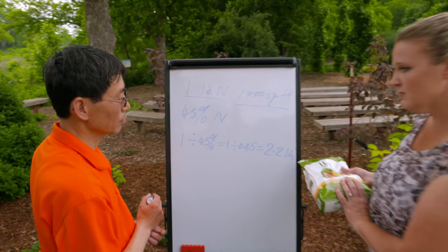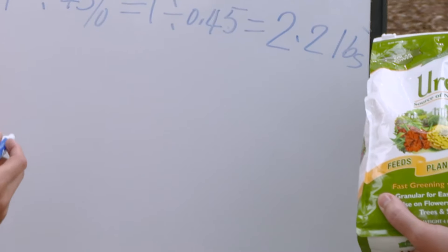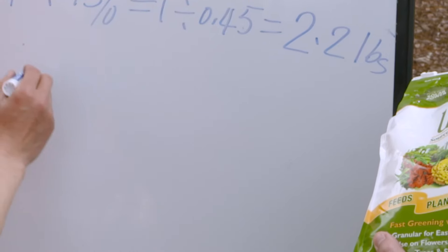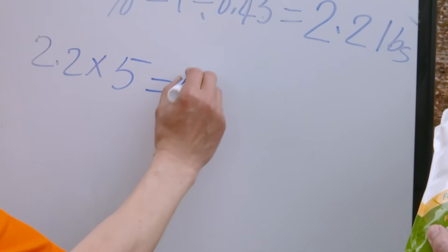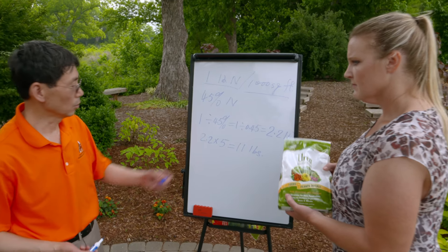And so this has four pounds, I only need 2.2, so all I have to buy is this one bag. If I had a larger yard like 5,000 square feet then we would just multiply this 2.2 times 5. That would be 11 pounds of urea needed for your lawn.